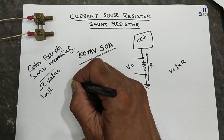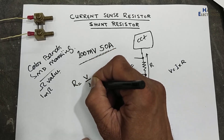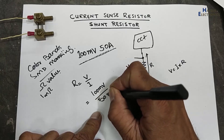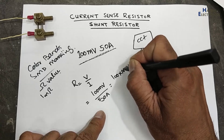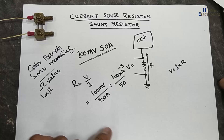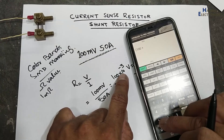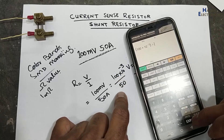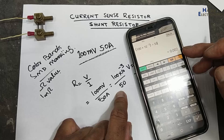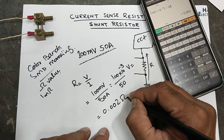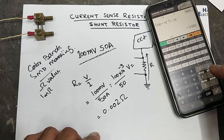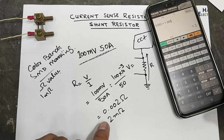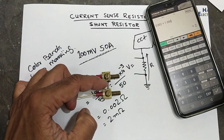What is the resistor value? R is equal to V over I. Voltage is 100 millivolt divided by 50 ampere — that means 100 × 10⁻³ divided by 50 ampere. This gives 0.002 ohms. Converting into milli-ohms by multiplying by 1000, we get 2 milli-ohms. So the resistor value of this piece is 2 milli-ohms.